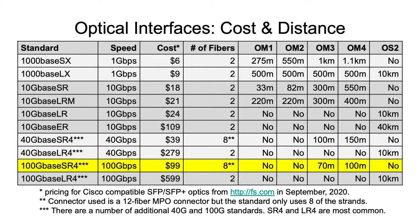Similarly for 100 gig: 100GBASE-SR4 is about 100 dollars a piece, requires eight fibers, and is very distance-limited with OM3 and OM4 fiber. The 100GBASE-LR4 is quite a bit more expensive — about six times the cost of the multimode option — but it will support 10 kilometers, which is great for campuses.